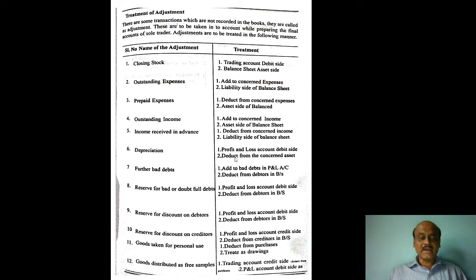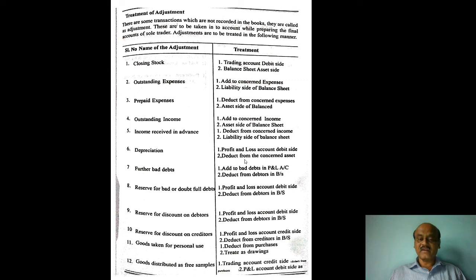Depreciation is deducted from the respective asset in the balance sheet. For example, depreciation on building or furniture — both are assets — is deducted from their value in the balance sheet.